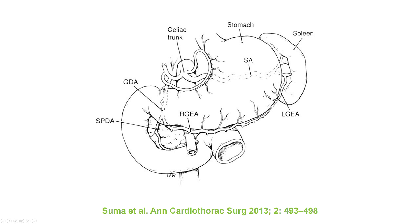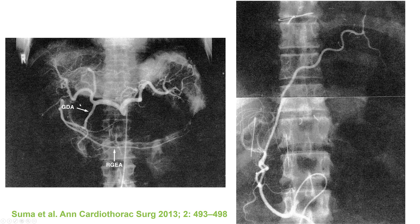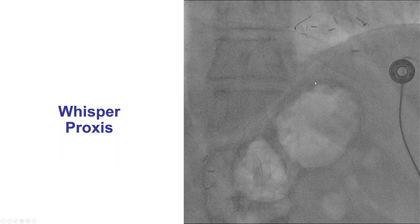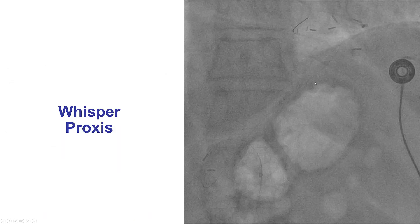The way this is used for coronary bypass is by essentially harvesting that artery, ligating it, then making a hole in the diaphragm and connecting it into the coronary artery. This is the artery being harvested, here is a hole made in the diaphragm through which the artery is inserted, and then it is anastomosed to a target coronary artery.